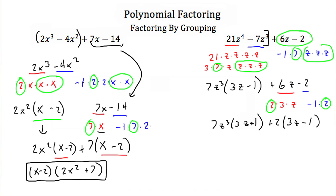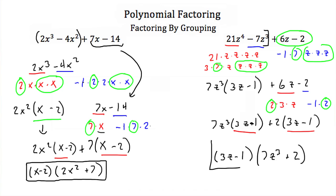Notice that both terms have 3z minus 1 in common, so we factor that binomial out. That gives 3z minus 1 times whatever's left in each term: 7z cubed from the first term and 2 from the second. So the factored form is 3z minus 1 times 7z cubed plus 2. That completes the tutorial on polynomial factoring.